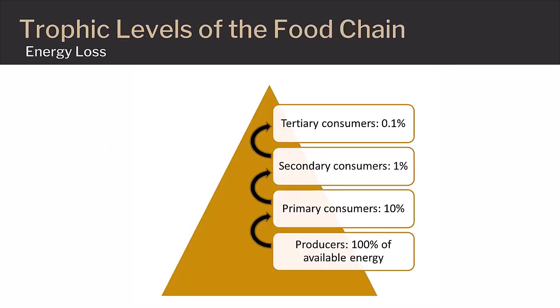As energy is transferred from one level to the next through a food chain, the fraction of energy available as compared to the original amount provided by the producers significantly decreases. In most ecological communities, approximately 10% of the available energy is transferred onto the next trophic level. This is because organisms must use some of the energy they acquire for basic life processes, and much of the energy is given off in the form of heat. This continual decrease in available energy limits the number of trophic levels present in a food chain.